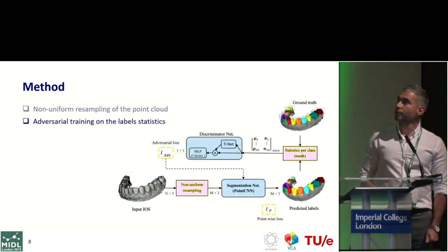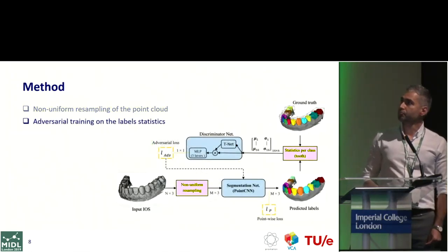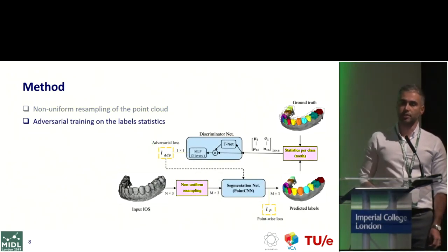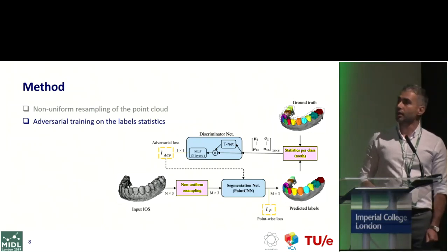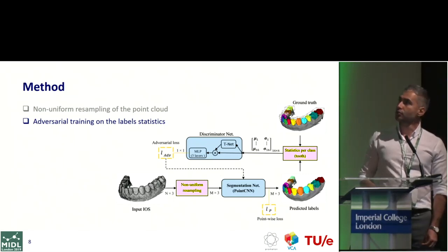Furthermore, semantic segmentation using point-wise cross entropy is inherently an ill-posed problem, as it does not include the relation between labels. We therefore use adversarial training to improve the result.